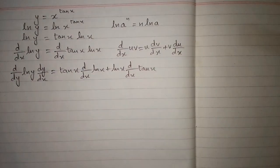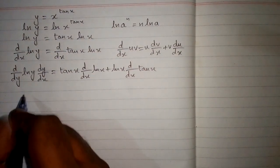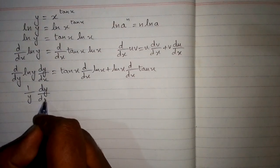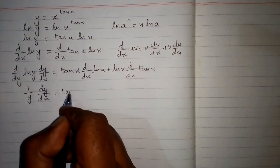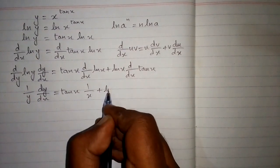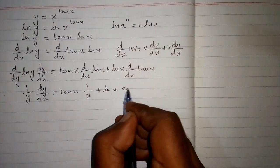Now the derivative of ln y is 1 upon y, and the derivative of ln x is 1 upon x, and the derivative of 10x is 10.